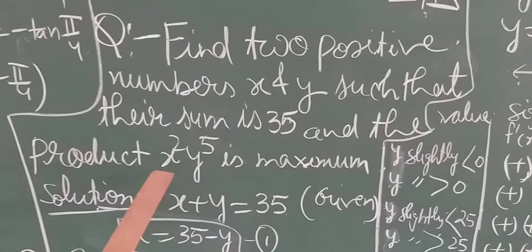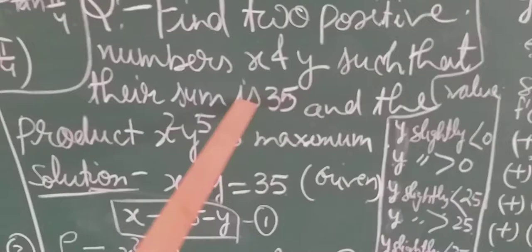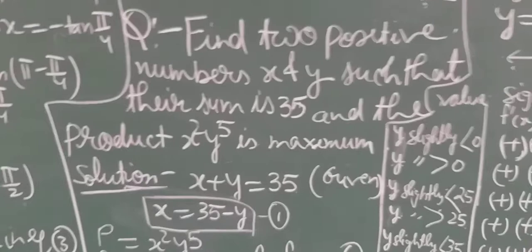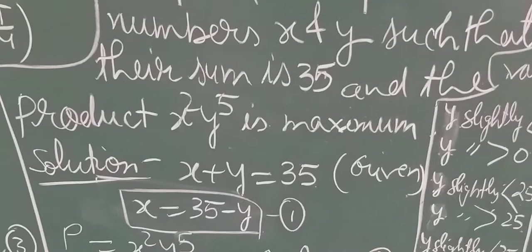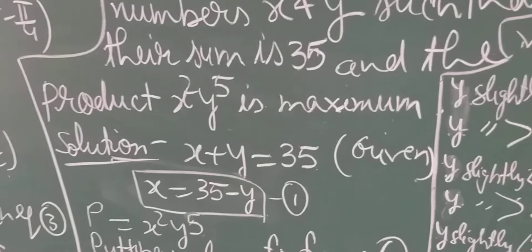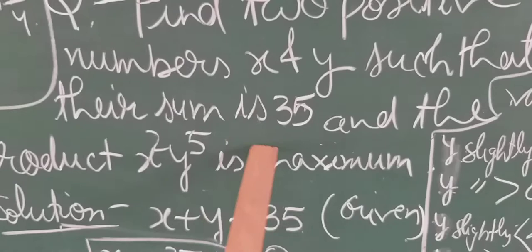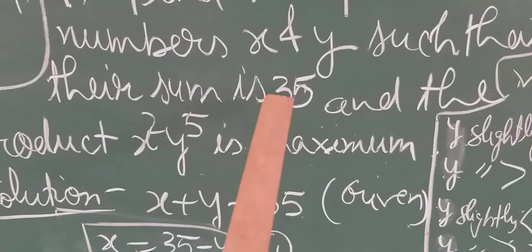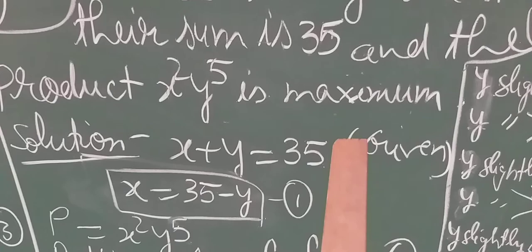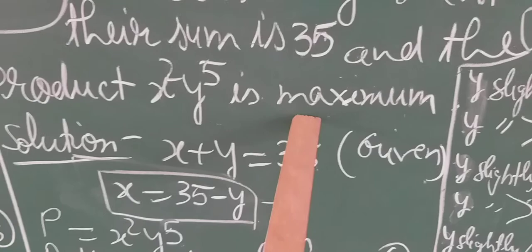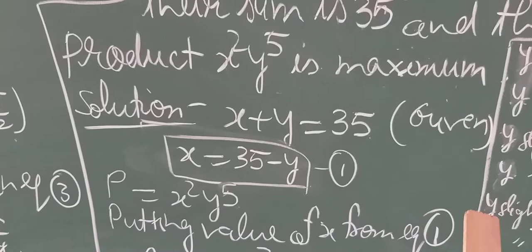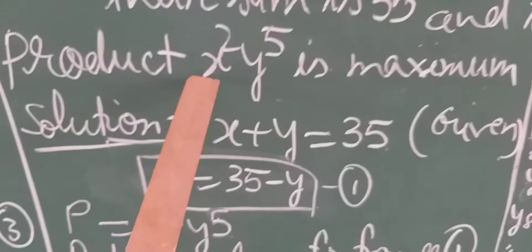We have to maximise x²y⁵. Before solving the word problem, keep two things in mind: first, check what is given — here the sum of both numbers is given. The given part we have to use as a substitution. The value which we have to maximise or minimise will be differentiated. Here sum is given, so we use the sum, and the product is what gets differentiated.